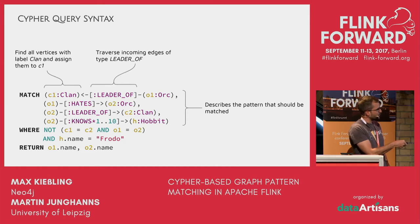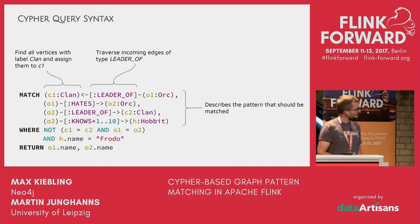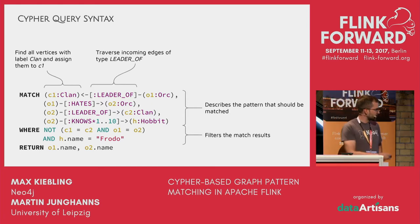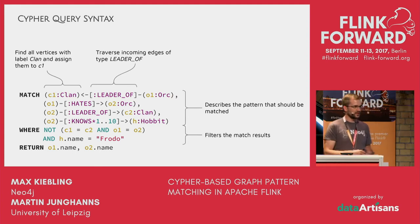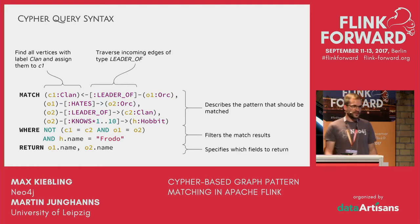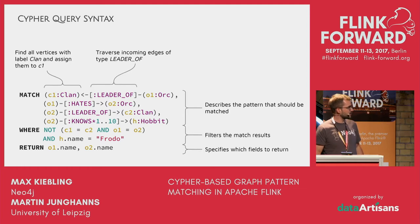The orc with variable o1 can be reused — it hates another orc, and so on. Then we have the WHERE clause for predicates, very similar to SQL — you can access the identity of vertices and edges. Here we say both clans must be different and both orcs must be different. You can also access properties — for example, the name property of the hobbit must be the literal 'Frodo'. The RETURN statement then specifies which fields or entities you want.